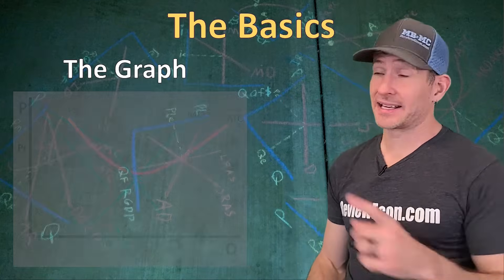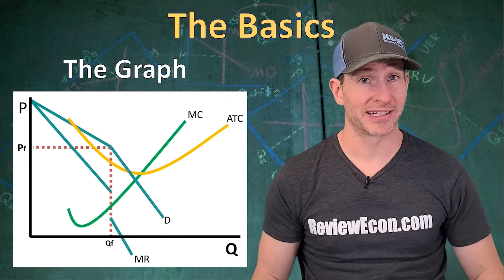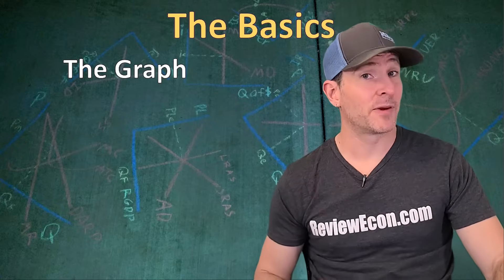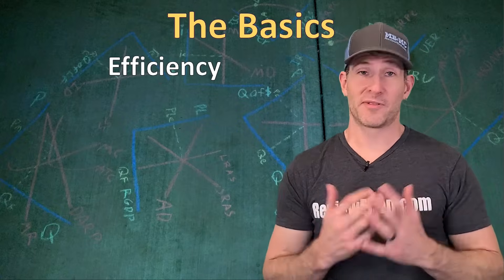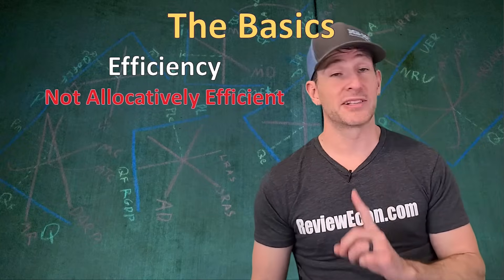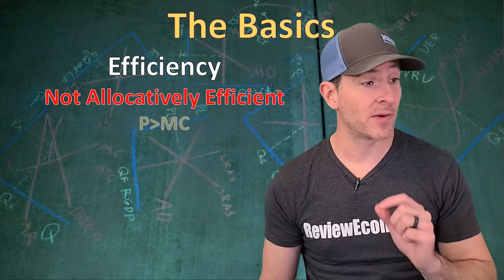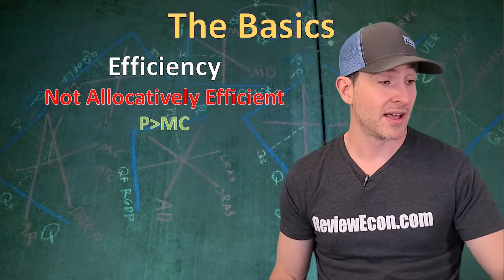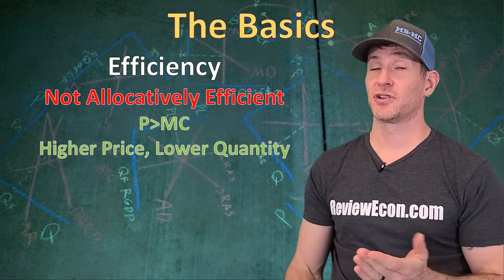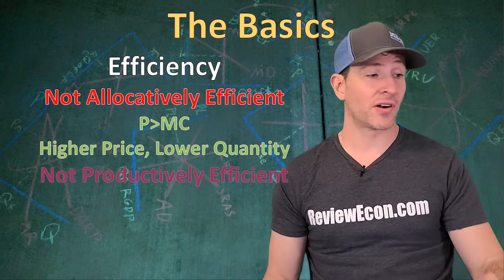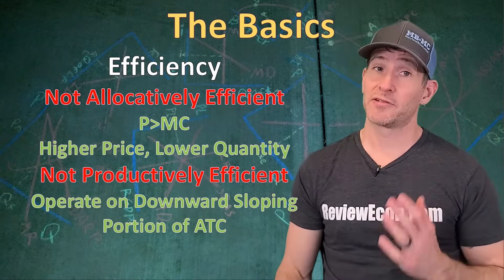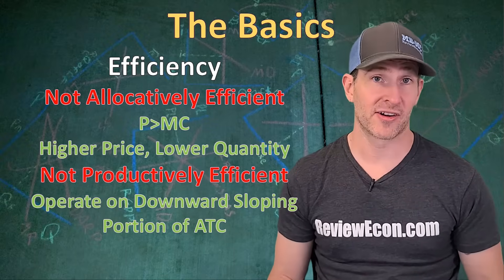So here's the graph for an oligopoly. It's got a kinked demand curve and other than that it looks a little like a monopoly graph. But you're not going to need to know that graph on the AP microeconomics exam, because that graph is not how we primarily analyze the behavior of oligopolies. Oligopolies are not going to be allocatively efficient because they will price above marginal cost. They will have higher prices than a perfectly competitive market and produce lower quantities, resulting in deadweight loss. Oligopolies are also not going to be productively efficient — they won't be producing at the minimum of the average total cost, but rather on the downward sloping portion of their average total cost curve.